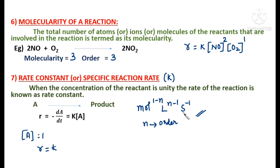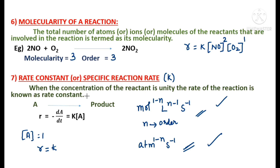If the reactants are in the gaseous state, the general unit for k changes to: ATM^(1−n) · s⁻¹. You should be thorough with these two general units, as they are needed to write one-word questions related to units for rate constants for various orders of reactions.